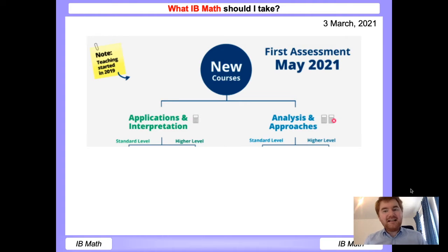Both applications and analysis you can take at standard level and at higher level. But notice the applications papers are both calculator and the analysis and approaches has one non-calculator paper and one calculator. And if you do higher level in either subject, there is an extra paper three sort of investigation style question as well. So that gives you an overview of what is offered at IB Math.